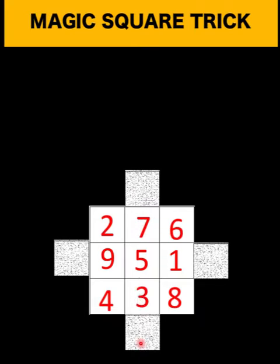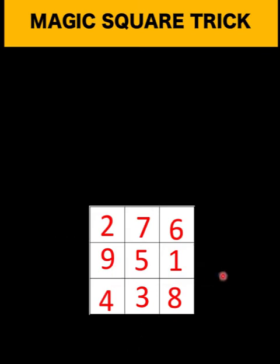Then let's remove the extensions. Let's get the row sum. 2 plus 7 is 9 plus 6 is indeed 15, 9 plus 5 is 14 plus 1 is also 15, 4 plus 3 is 7 plus 8 is also 15.